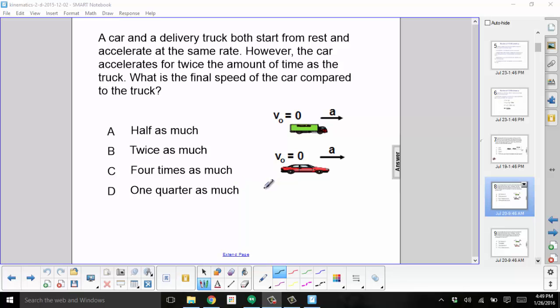We need to use the first kinematics equation. V equals V0 plus AT. In both cases, they start from rest, so V0 is zero.